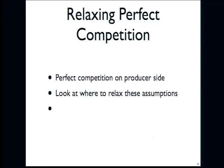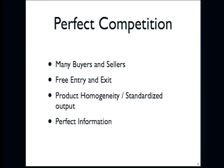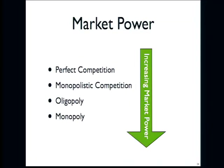I'm going to move on from social costs to this question of monopoly and oligopoly. This is the one that's not in Chapter 10, but I still want you to know it. Last time I was talking about perfect competition, but I want to talk about where we would change these assumptions and get to points that are not at this equilibrium quantity. So this is where we were at the end of last class: many buyers and sellers, free entry and exit for firms, standardized homogenous output, and everybody has information about costs and prices. We're going to change these when we think about market power.